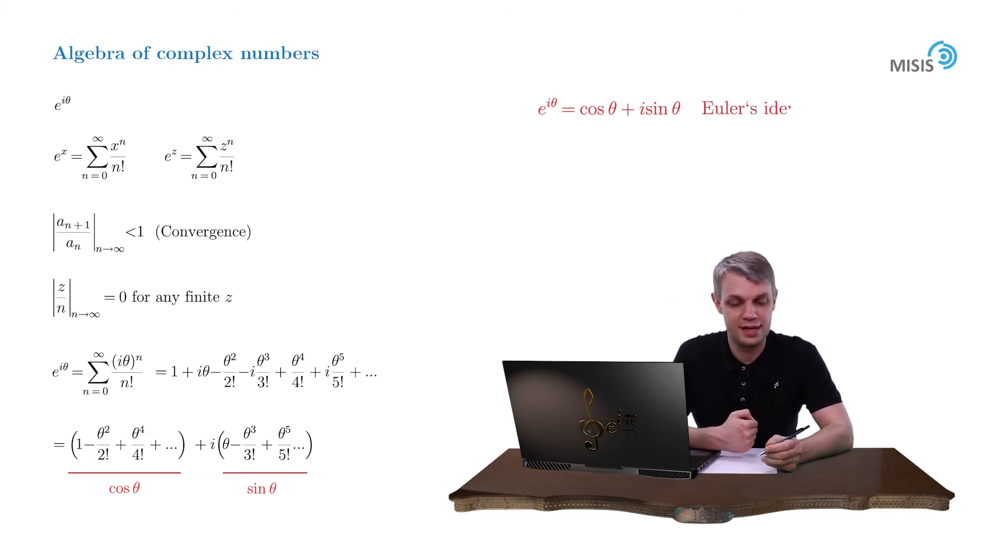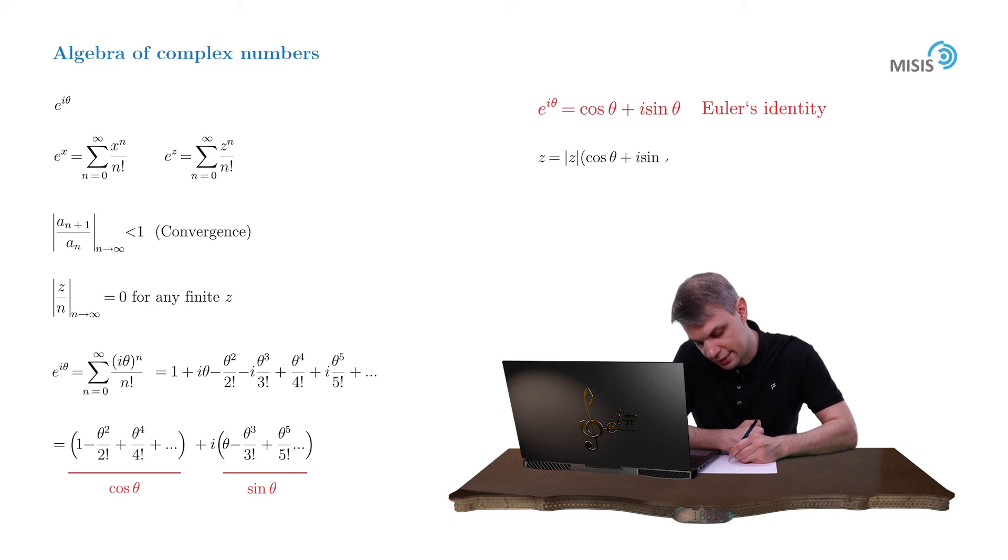And this is the celebrated Euler's identity. Now let's recall that our complex number can always be represented using its trigonometric form, like modulus of z times cosine theta plus i sine theta. But using Euler's identity now we can convert it into simply modulus of z times e to i theta.